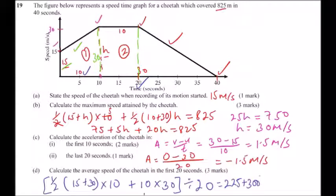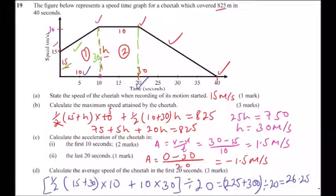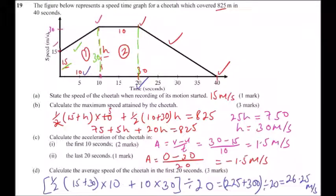Using a calculator: 225 plus 300 equals 525, divided by 20 gives 26.25 meters per second. That is the average speed of the cheetah in the first 20 seconds. This question is from the topic of linear motion, which is covered in Form Two.